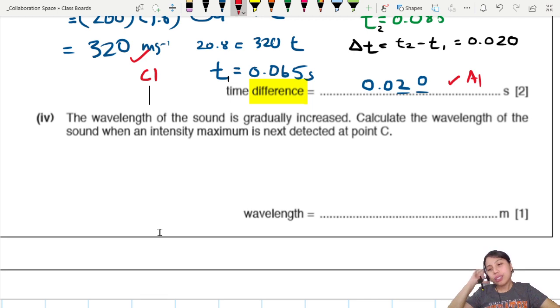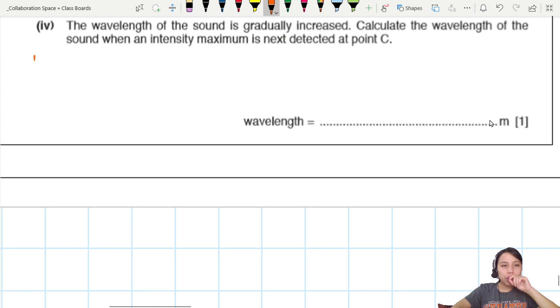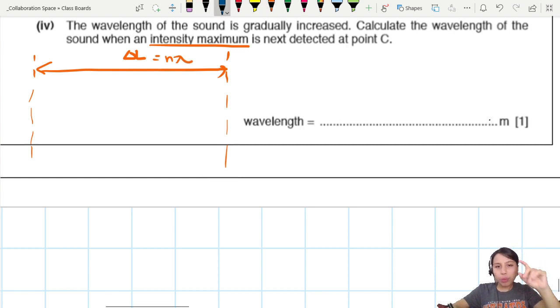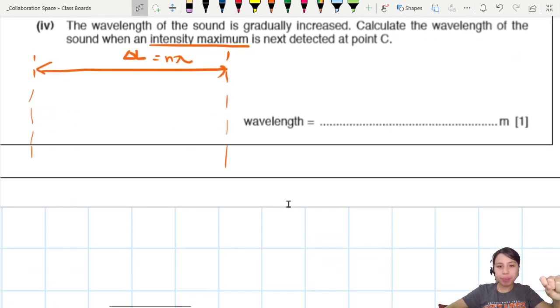Let's go to the final challenge section. The wavelength of the sound is gradually increased. Calculate the wavelength of the sound when the intensity maximum is next detected. So this wavelength we draw is quite small. If you increase the wavelength, it might look something like this. But what is not changing, though, is the path difference. The path is fixed. This one I travel 20.8, this one I travel 27.2. So path difference here, delta L, it's going to be fixed at 6.4 meters. In that sense, let's draw a diagram to help us out here. Path difference is fixed. And for intensity maxima, you need to be a multiple of some wavelength. Currently, we have 4 lambda to fit inside there, right?